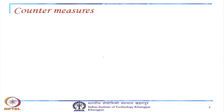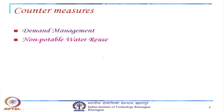Because there will be salt water intrusion in coastal aquifers, we need countermeasures. One approach is to manage the demand. By managing the demand itself, we can counter salt water intrusion. Another measure is non-potable water reuse. A third measure is modification of pumping rates — with modified pumping rates, we can control seawater intrusion.